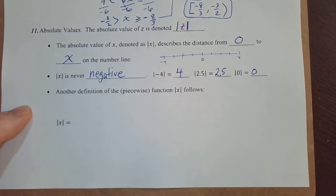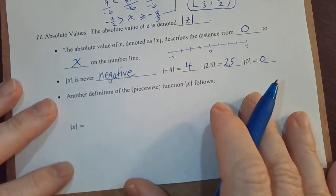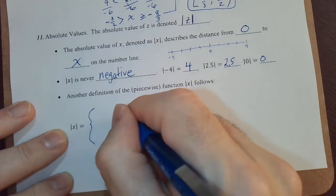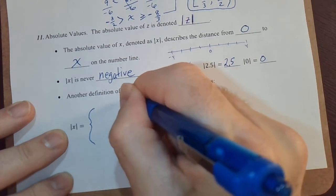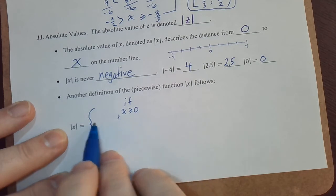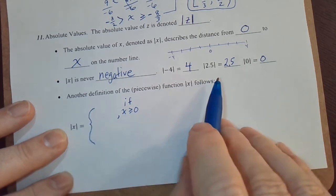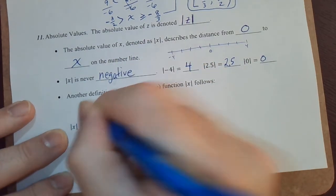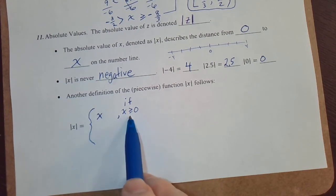So here's another definition that treats it like a piecewise function. If x is greater than or equal to 0, what is the absolute value of x equal to? How could you simplify it if x is greater than or equal to 0? You can just remove the absolute values, right? Like this one over here, 2.5 is positive, so the absolute value of it is just 2.5. So I can say the absolute value of x is equal to x as long as x is greater than or equal to 0.